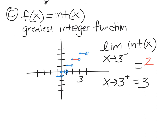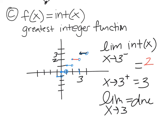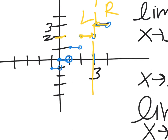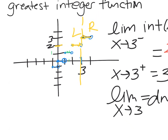From the right-hand side approaching 3, the y-value is 3. So the limit as x goes to 3 does not exist — the left gives 2 and the right gives 3. The greatest integer function doesn't have a limit at any of the integers. But if you ask for the limit as x goes to 1.5, both sides approach 1, so the limit is 1.